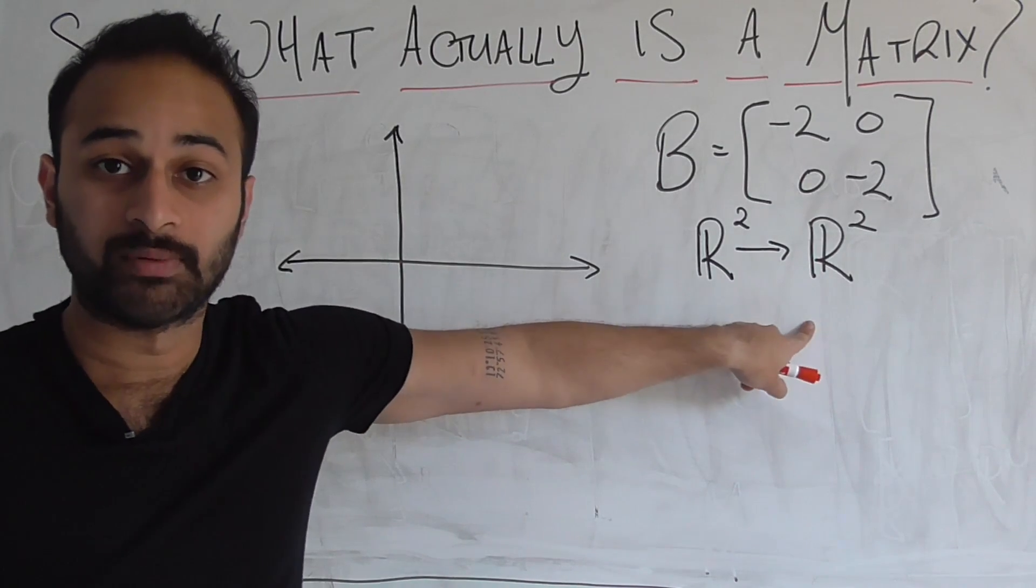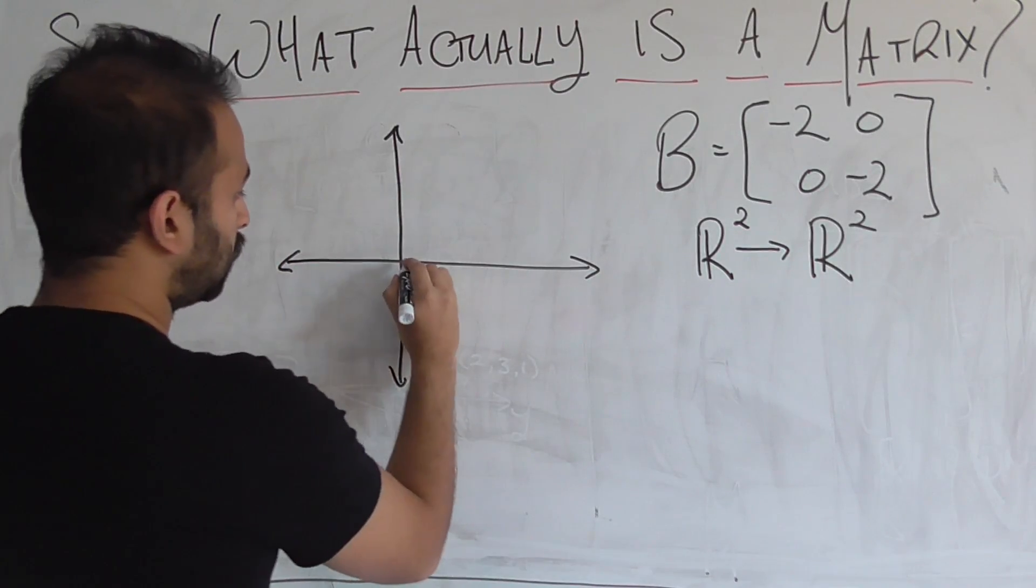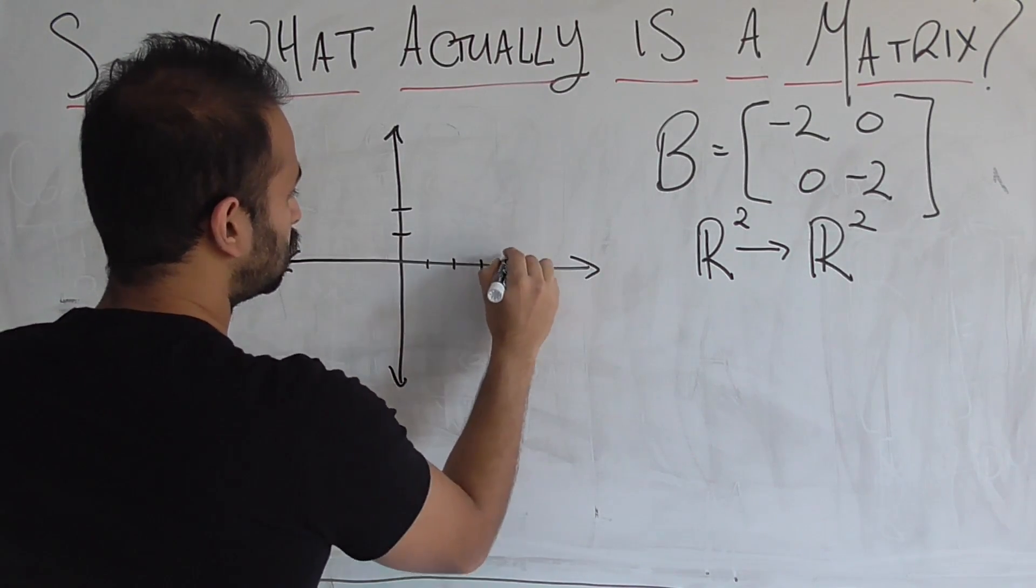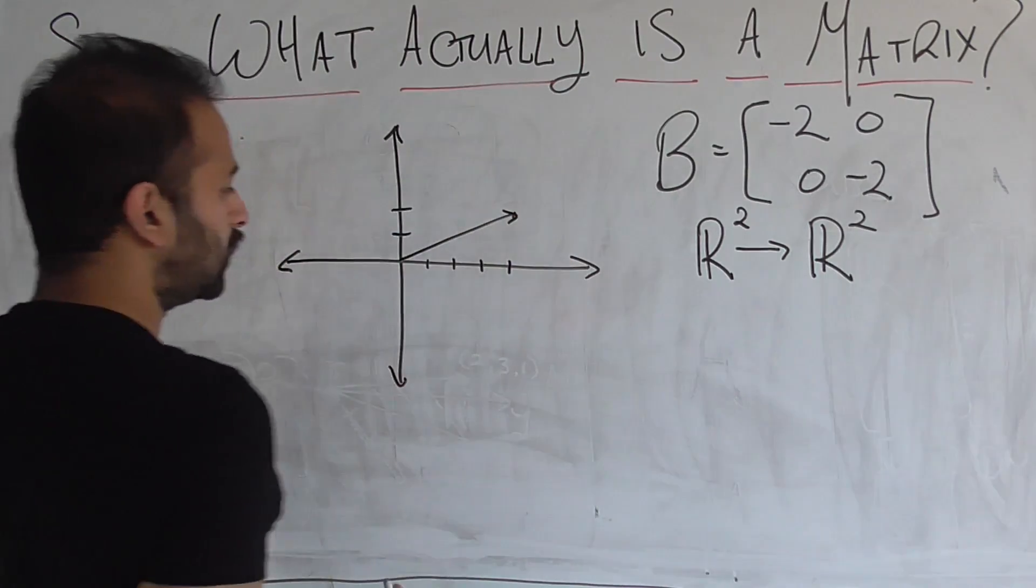Remember, here we're working just in two dimensions to two dimensions. So let's say our one, two, three, four, one, two. Let's say this is our vector. So this is four comma two.